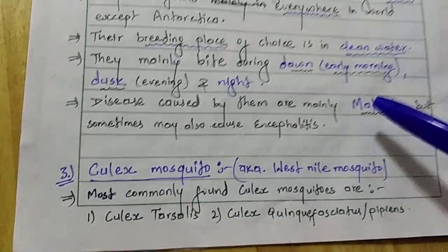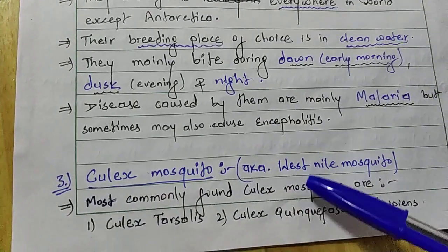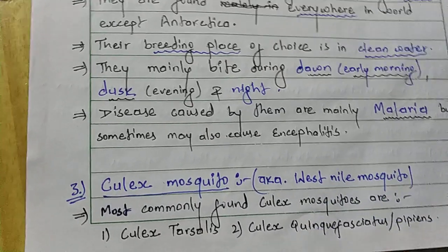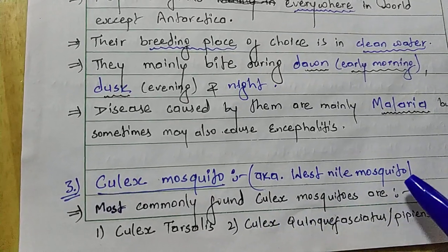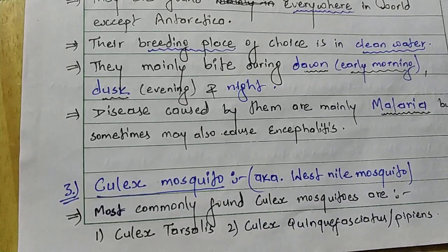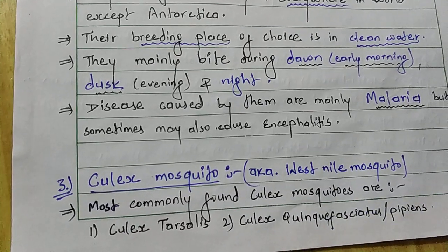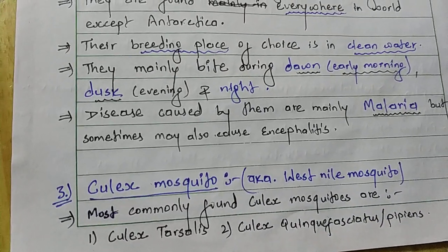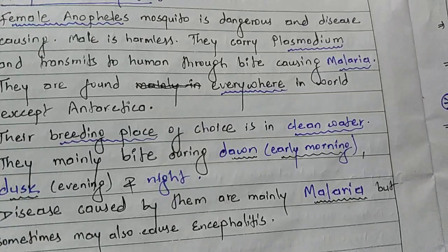Diseases caused by Anopheles are mainly malaria, but sometimes may also cause encephalitis. The third type is the Culex mosquito, also known as the West Nile mosquito. The most commonly found Culex mosquitoes are Culex tarsalis and Culex quinquefasciatus, also known as Culex pipiens.